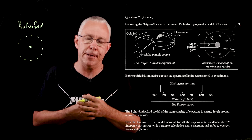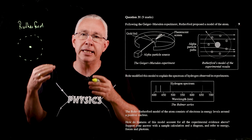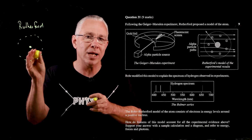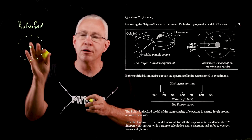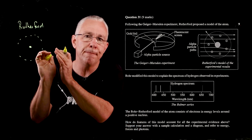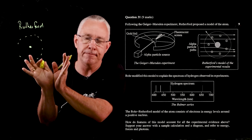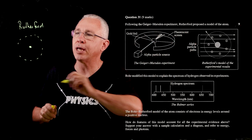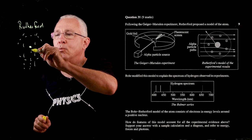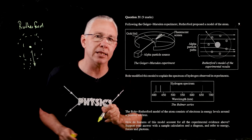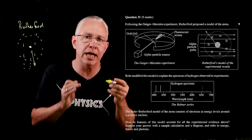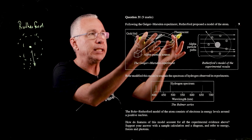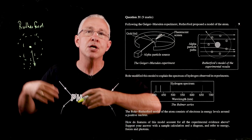A very small number not only deflected but bounced back. Rutherford was so shocked he likened it to a cannonball bouncing off tissue paper. This led him to predict that most of the atom's mass was concentrated in the nucleus — about one ten-trillionth of the atom's volume. So we have a compact nucleus with electrons in orbit, explaining why most alpha particles passed through and only occasionally one bounced back due to Coulomb repulsion.